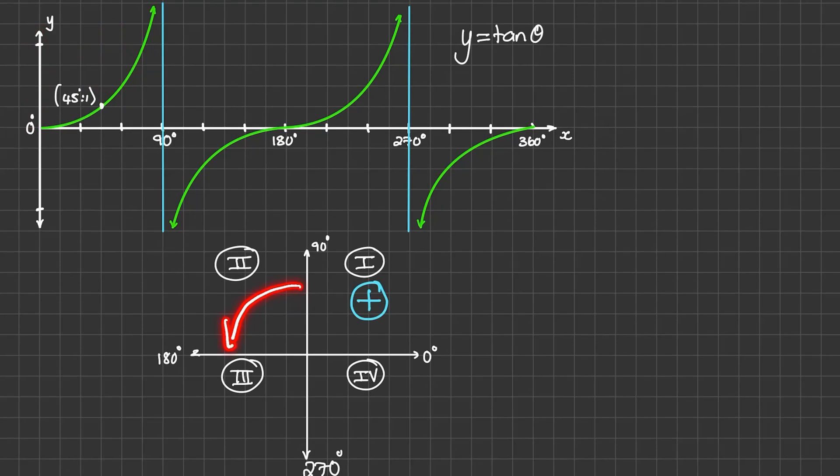In the second quadrant, between 90 and 180 degrees, we can see that the tangent of theta is negative, meaning below the x-axis and it will produce negative y values. So in the second quadrant, tan is negative.